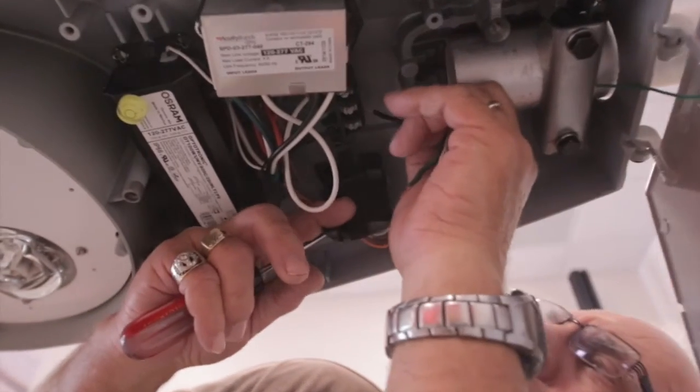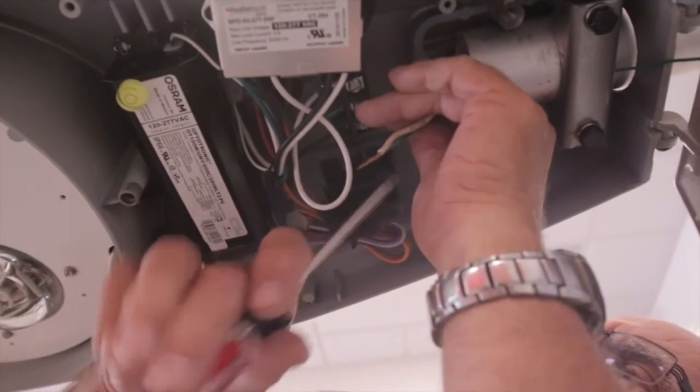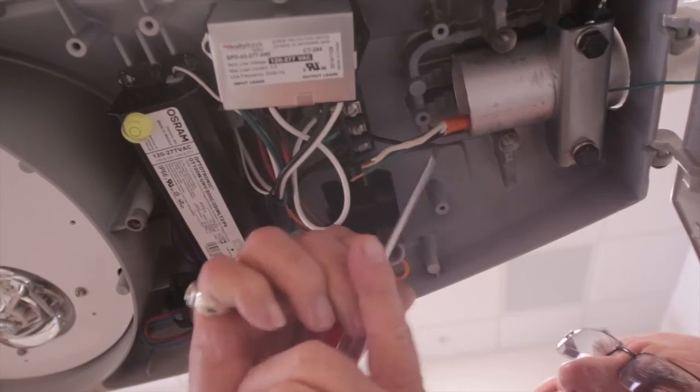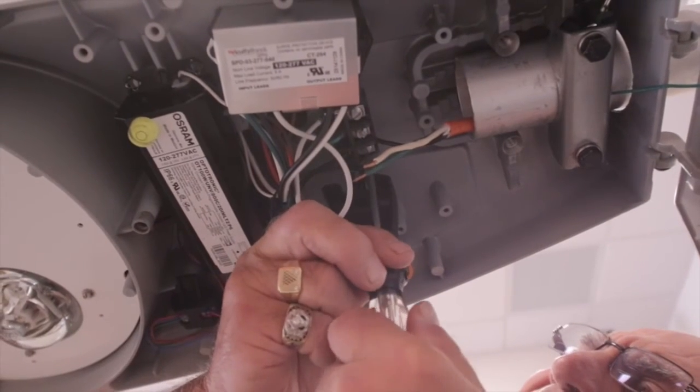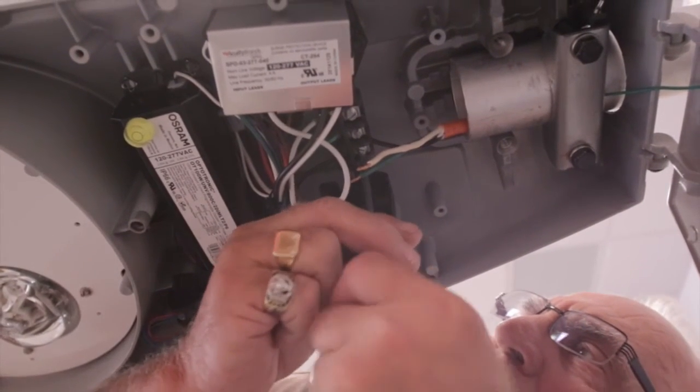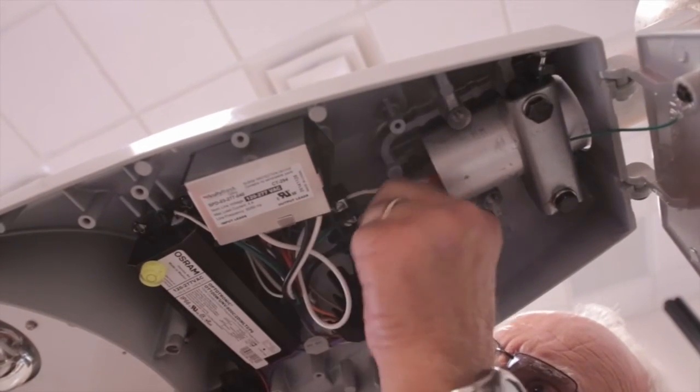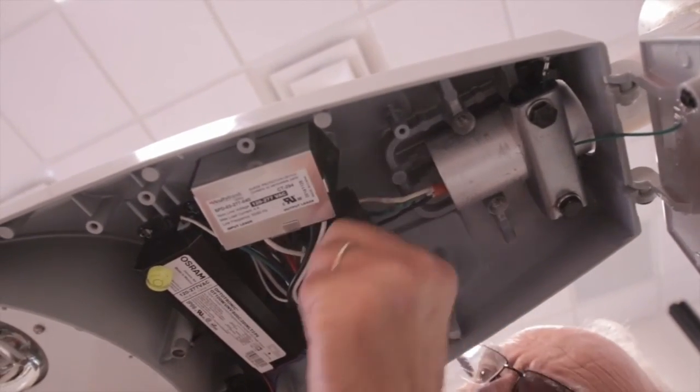Now you're ready to wire the luminaire. Start by loosening the terminal block screws. Then install the color-coded wires: line, ground, and common. Tighten the terminal block screws after you install each wire. Give each wire a gentle tug to make sure it's secure.